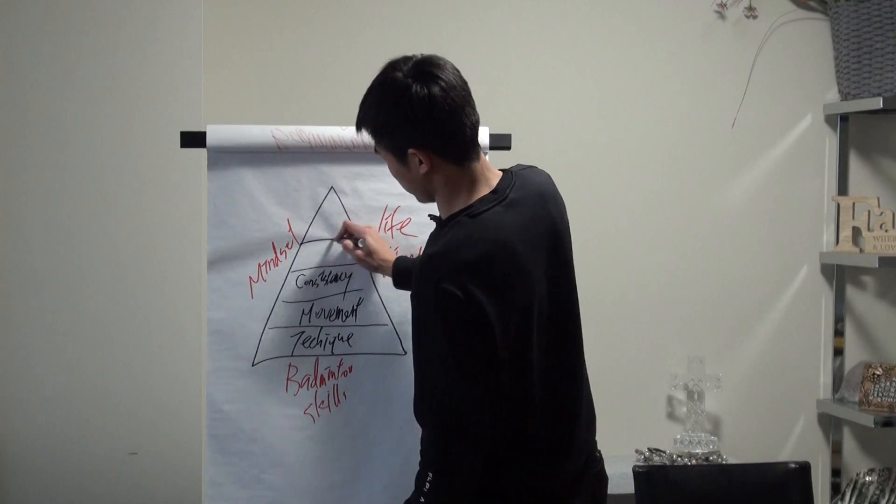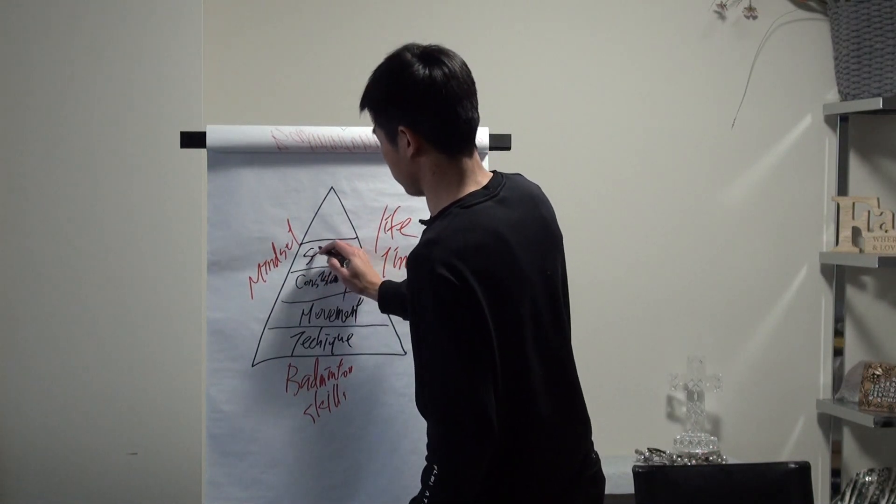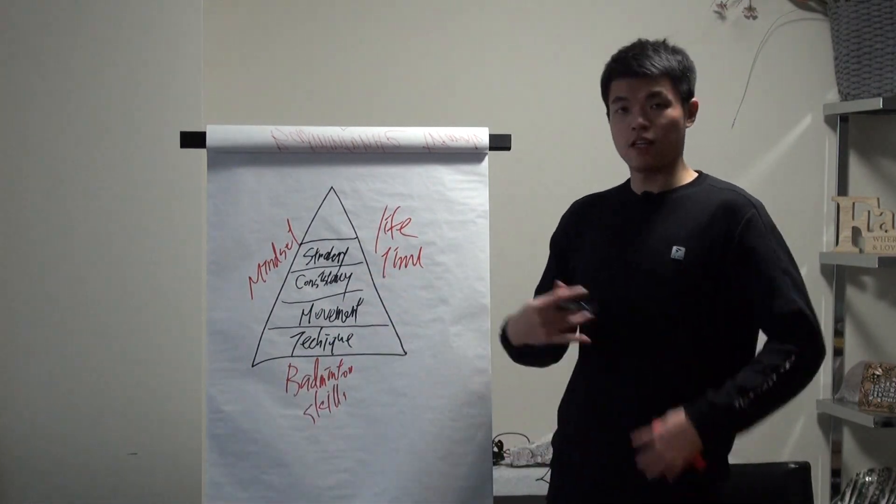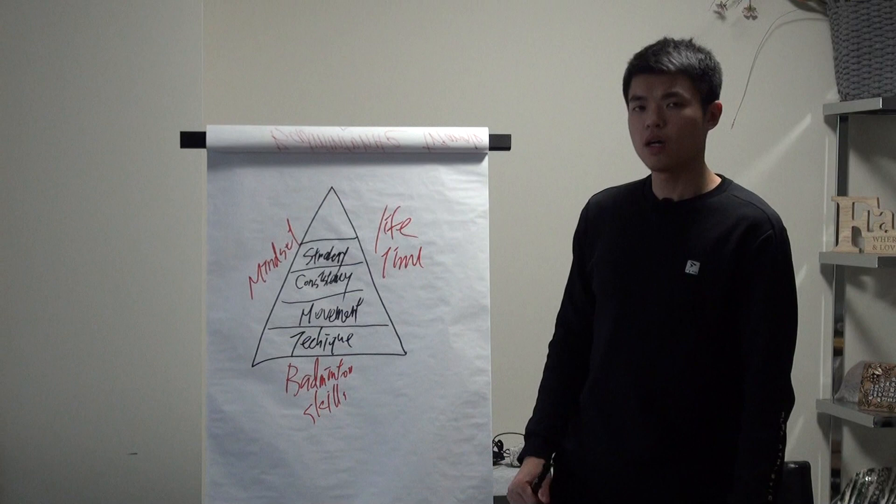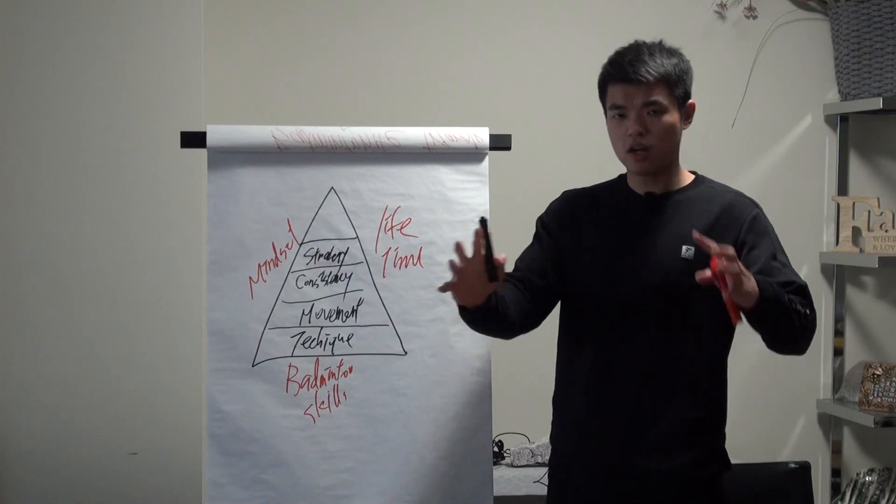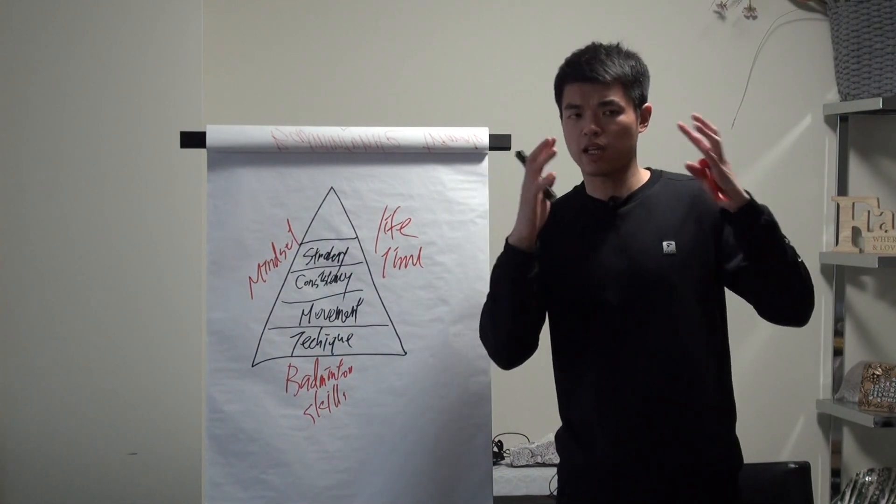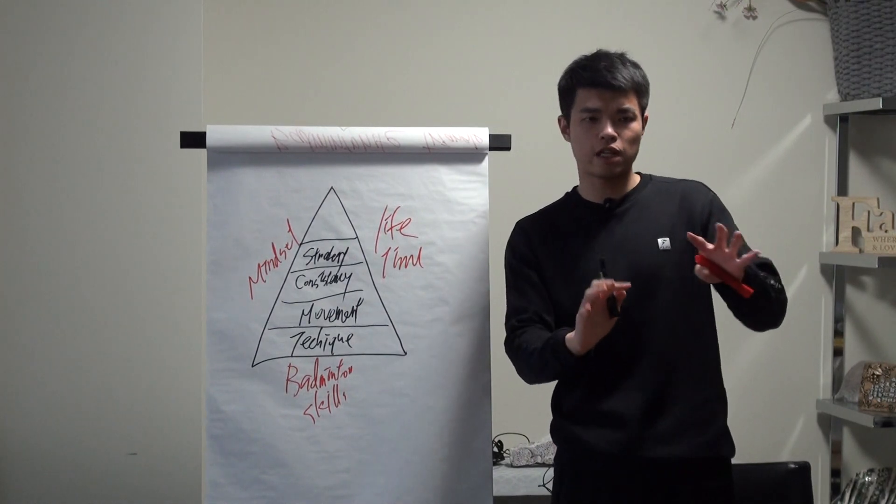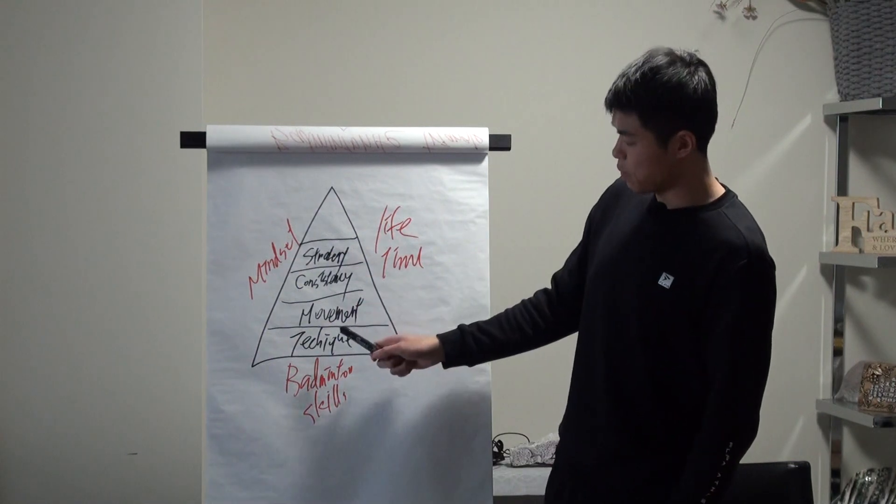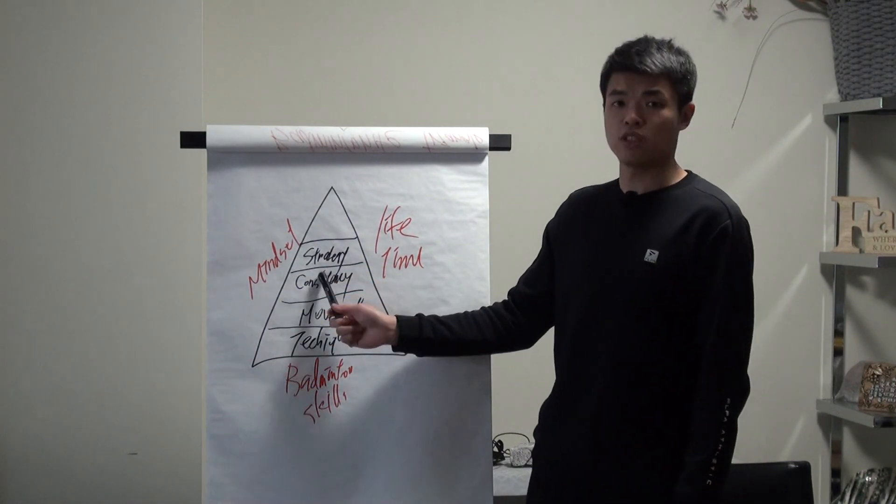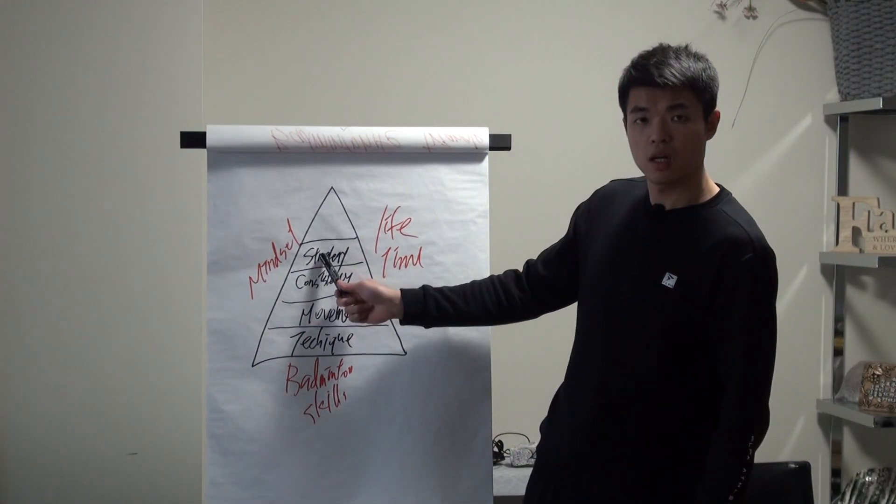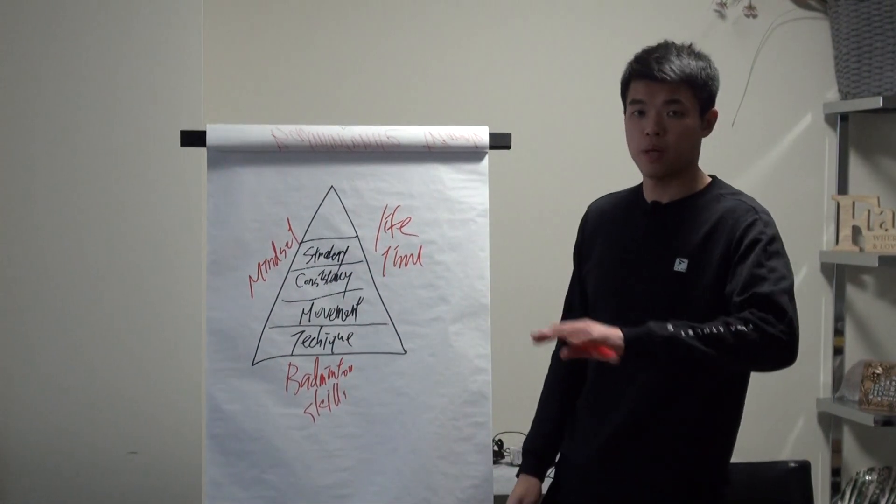The next, we're going to be strategy. So after you work on your consistency, then you're going to start to, okay, how can I use these skills into my games? And what kind of games I want to design? And if I'm against this opponent, how I'm going to, you're going to start to learn how you're going to study your opponents at this stage. So, don't jump like from, after I learn a technique, I'm going to know how to strategy. After I learn footwork, I want to know how to strategy. If you don't have these three, you won't have this.